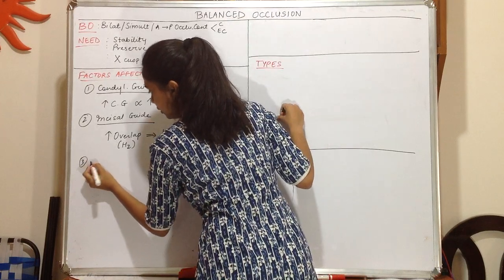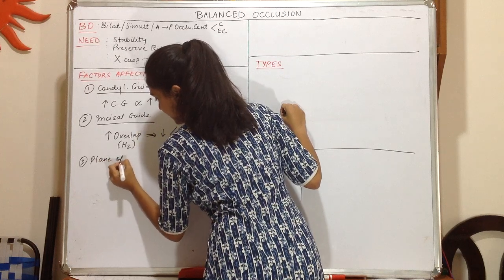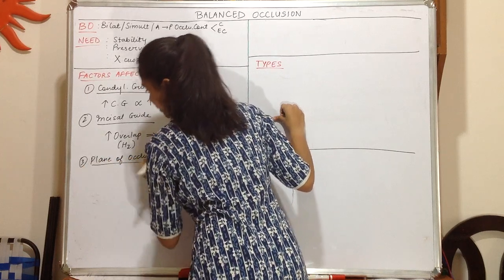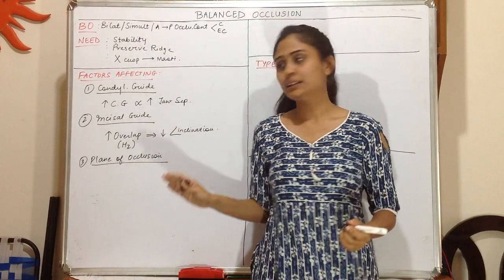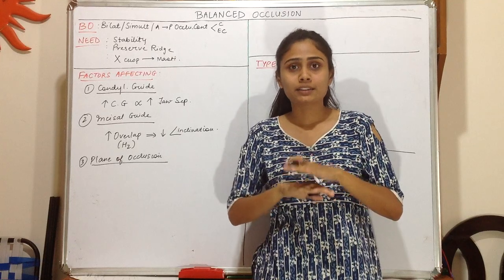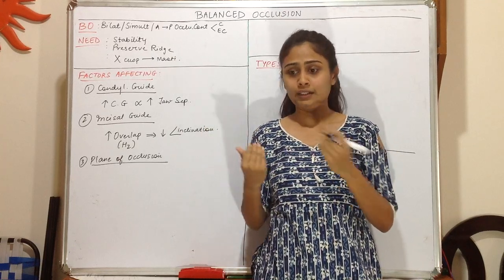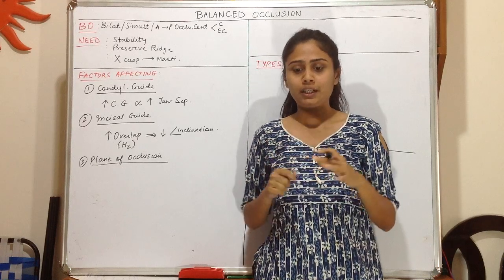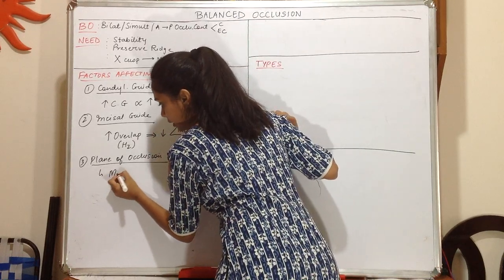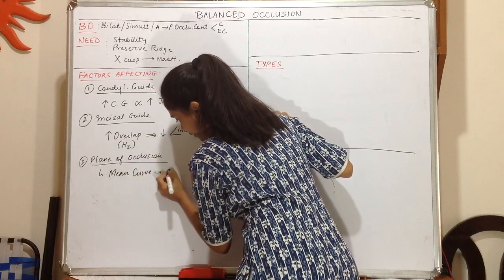Next we have the plane of occlusion. The plane of occlusion is an imaginary surface which contacts the incisal edges of the anterior teeth and the cusp tips of the posterior teeth. It is a theoretical concept, but it represents the main curvature of any surface.